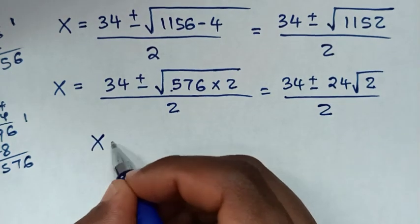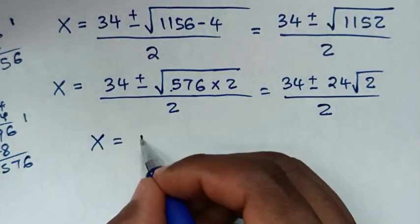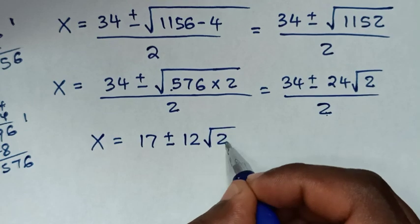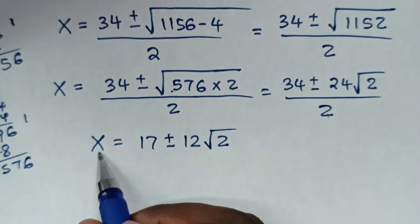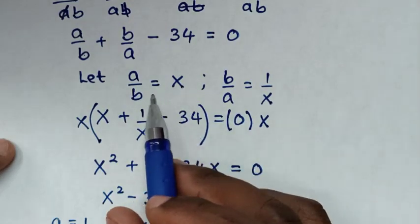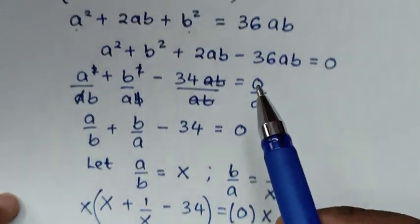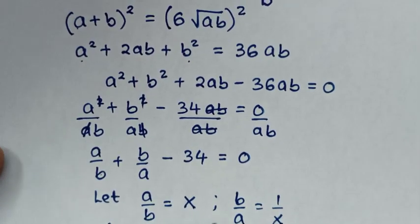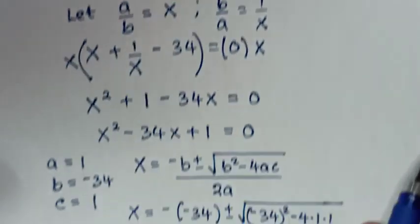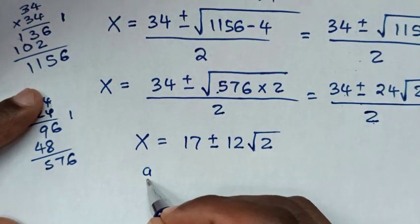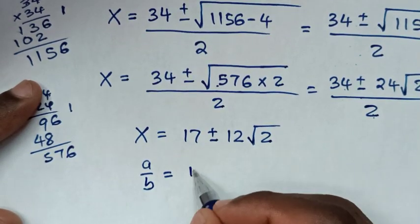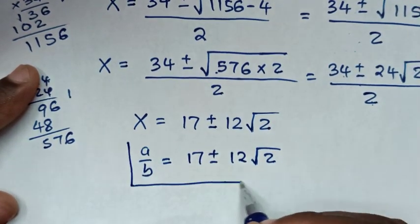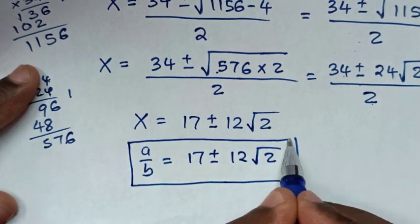Then in the next step, it will be x is equal to 34 divided by 2 is 17, plus or minus 24 divided by 2 is 12, times square root of 2. We recall that we let x equal to a over b, and we are going to find the value of a over b. So x is equal to 17 plus or minus 12 square root of 2. Therefore this is the final answer for the value of a over b.